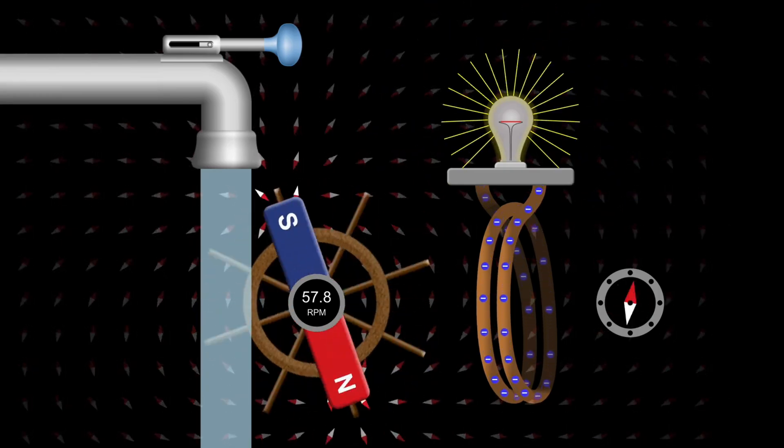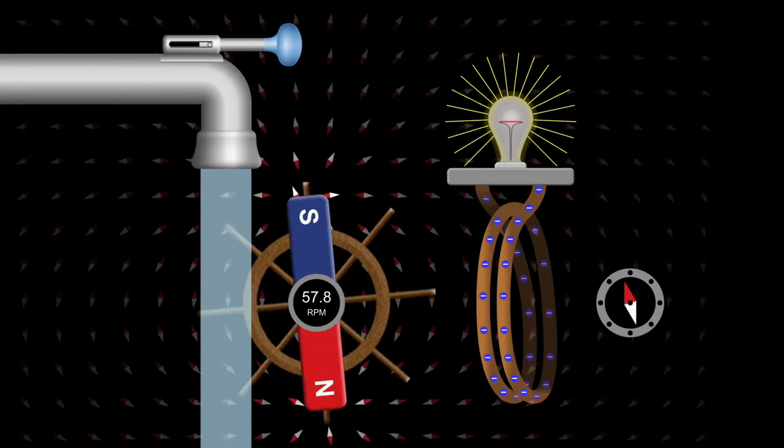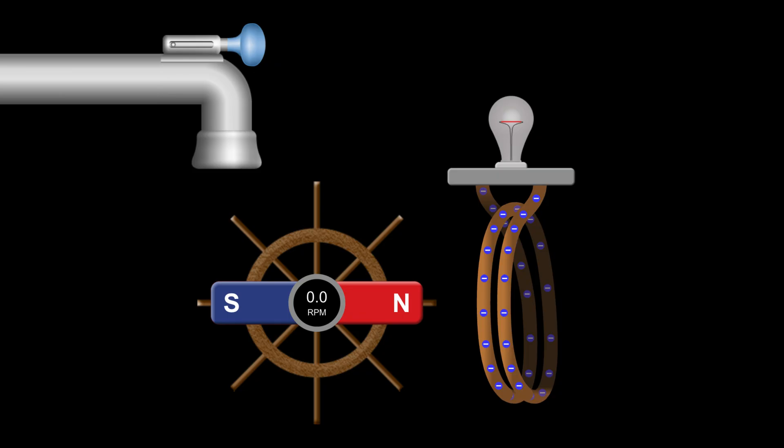Now that we understand how a spinning magnet can light up the bulb, let's imagine you're standing beside this setup, thinking like Faraday. You start to wonder, what if I want the bulb to glow brighter? What could I change?